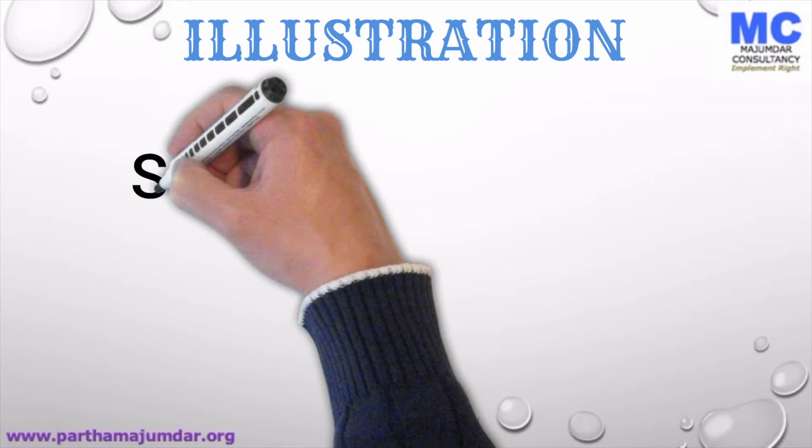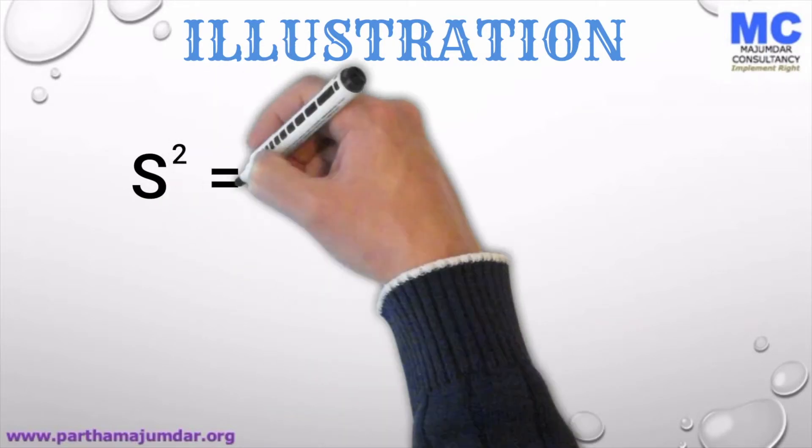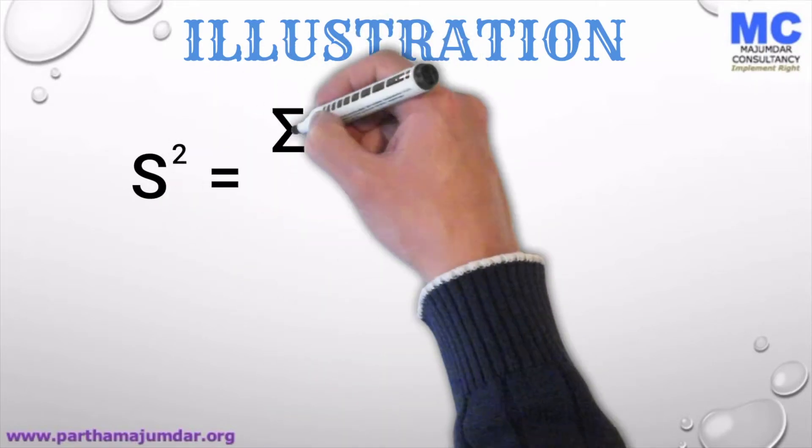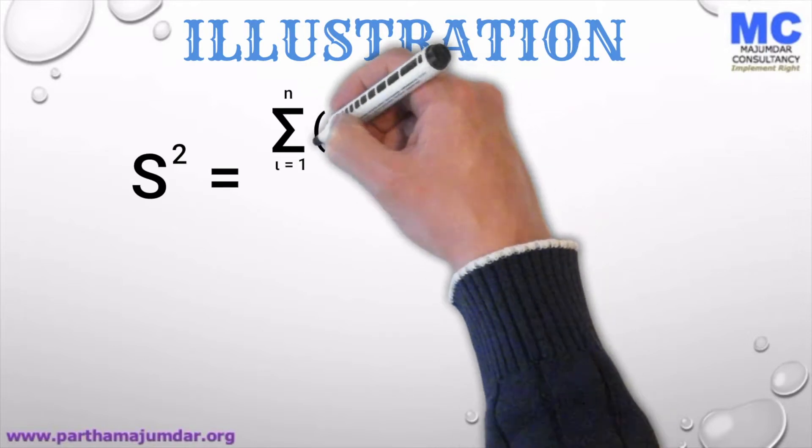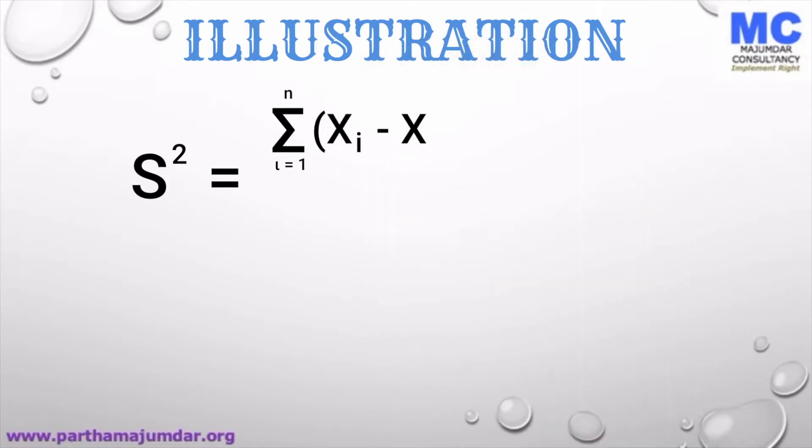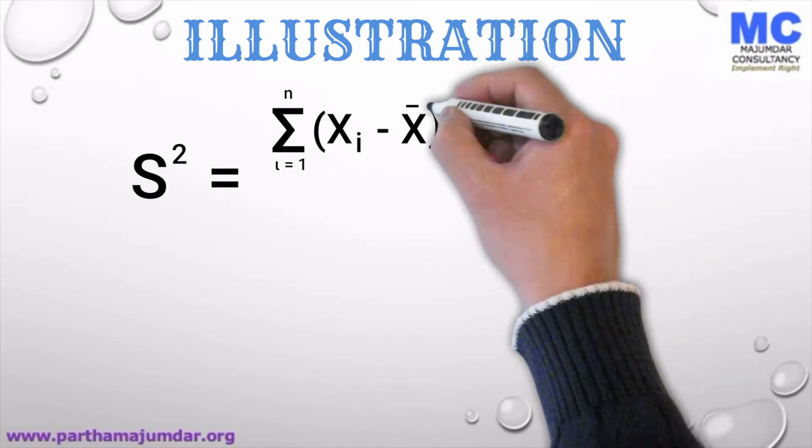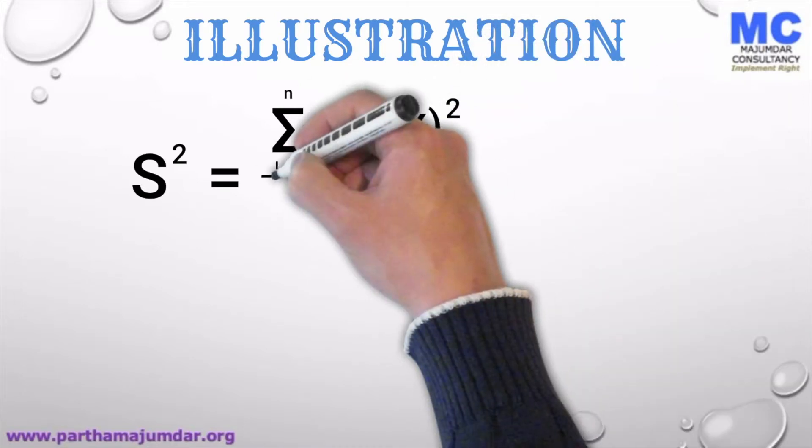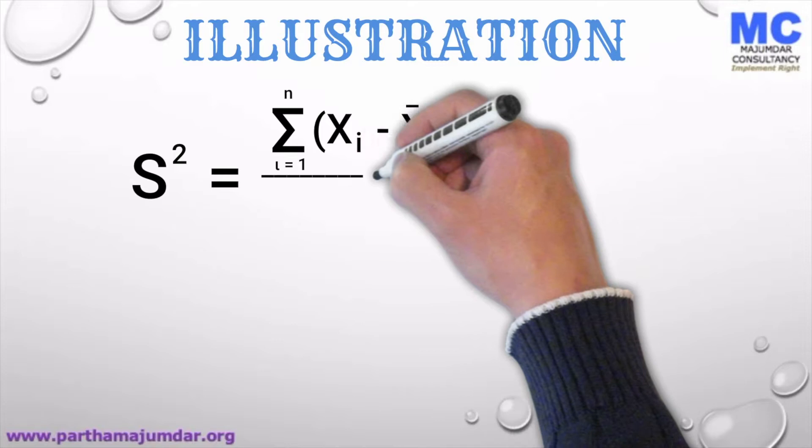Let us understand this through an illustration. We know that the formula for sample variance is s squared equals sigma xi minus x hat, where x hat is the mean of the sample, whole squared divided by n minus 1.